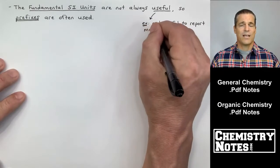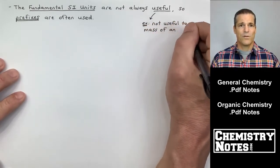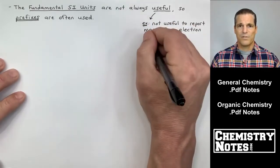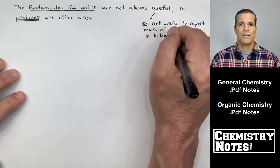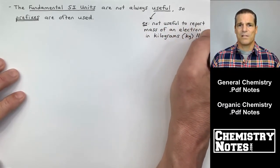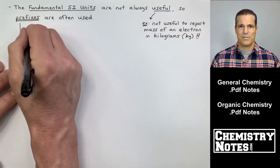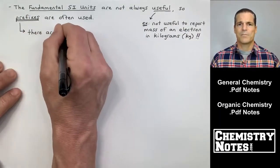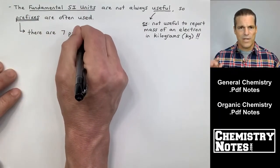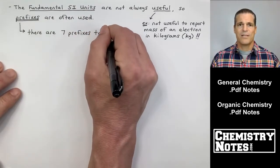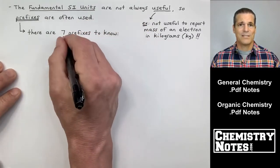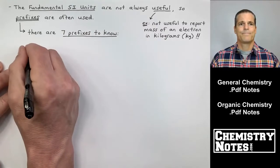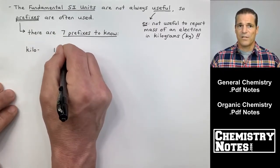And that's what the top of page two of today's notes are talking about. The fundamental SI units are not always useful. So prefixes are often used. And by useful, I mean, it's not useful to report the mass of an electron in kilograms. I think I misspoke earlier or just now when I was kind of talking off the top of my head, the SI base unit for mass is not grams. It's kilograms. So there are seven prefixes to know.